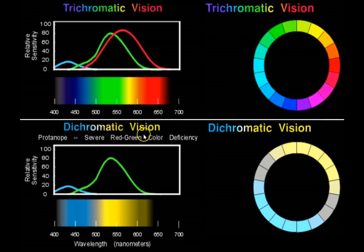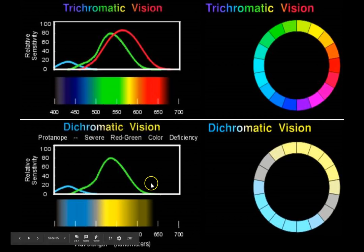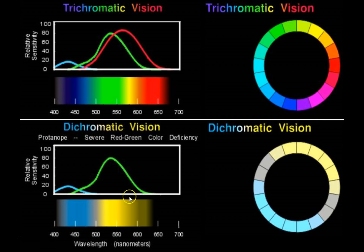This individual has a form of dichromatopsia called protanopia. You can see that they've lost the long wavelength photopigment. This results in a narrowing of the range of wavelengths that they're sensitive to — only up to about 625 nanometers instead of 660 or 670. But more importantly, it makes it really hard to know what wavelength you're looking at within this range.